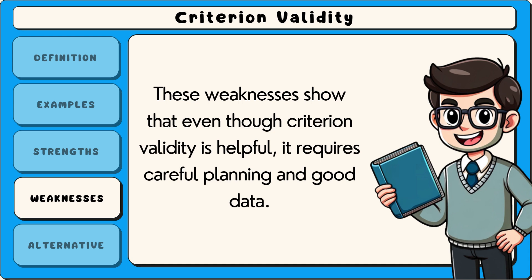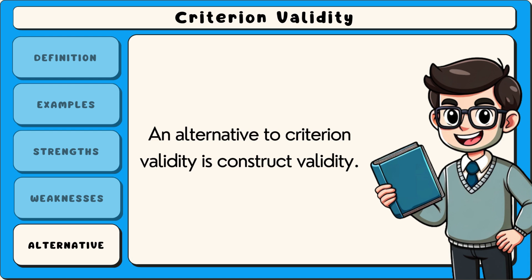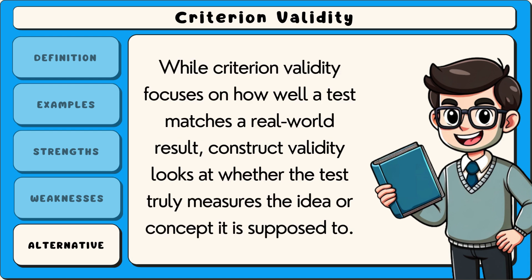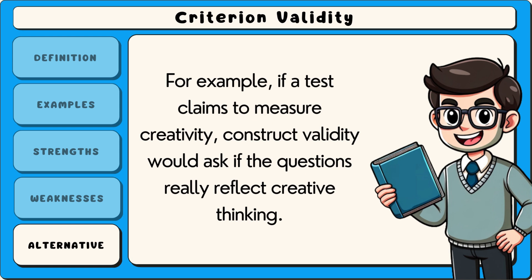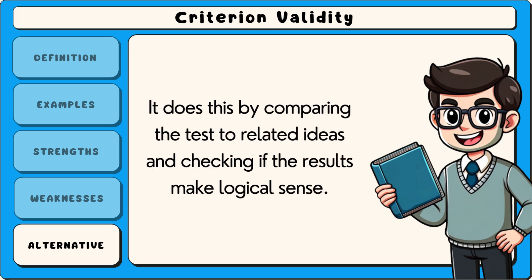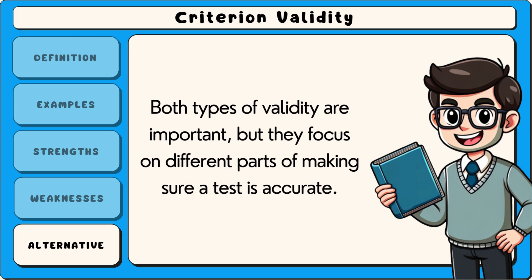These weaknesses show that even though criterion validity is helpful, it requires careful planning and good data. An alternative to criterion validity is construct validity. While criterion validity focuses on how well a test matches a real-world result, construct validity looks at whether the test truly measures the idea or concept it is supposed to. For example, if a test claims to measure creativity, construct validity would ask if the questions really reflect creative thinking, by comparing the test to related ideas and checking if the results make logical sense. Both types of validity are important but they focus on different parts of making sure a test is accurate.